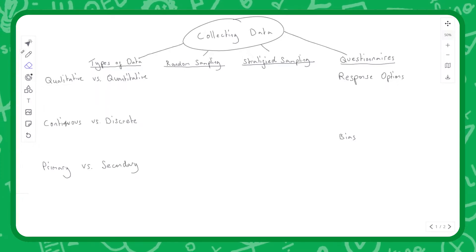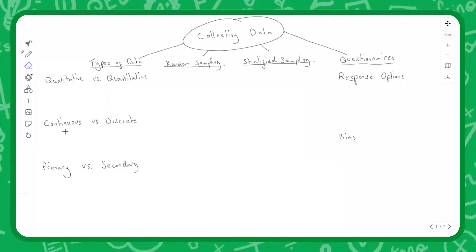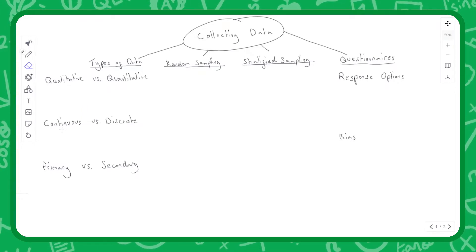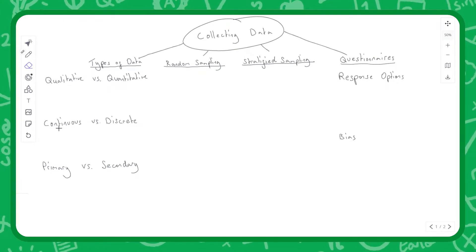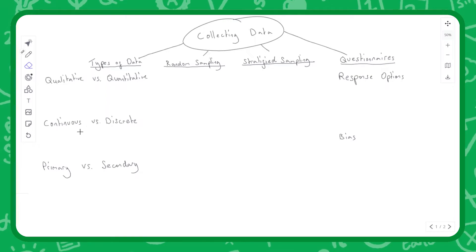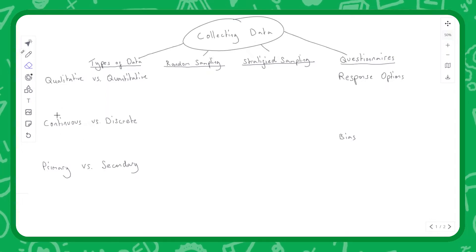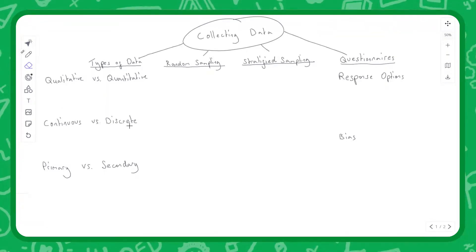Likewise with time. Usain Bolt can run 100 meters in 9.58 seconds, but we could get more precise—9.581694 seconds. There's no end in sight really. With continuous data we can get more and more precise. Discrete data is the opposite. Discrete data is already in nice categories for us.